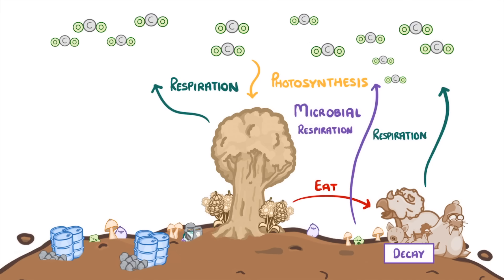However if the dead organisms somehow avoid being decayed like this, and instead are decayed in anaerobic conditions, so without oxygen, then they might slowly be converted into fossil fuels like oil, natural gas or coal. And all of these fossil fuels can then be burned by humans to produce carbon dioxide again.